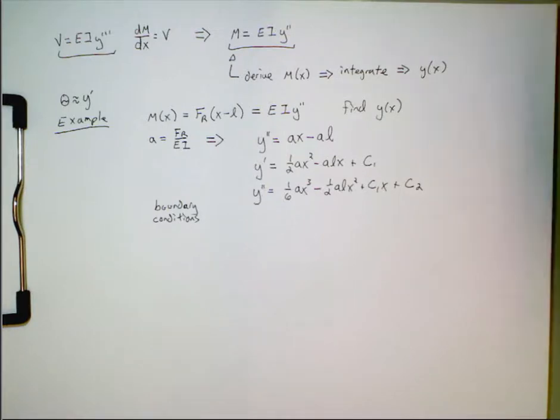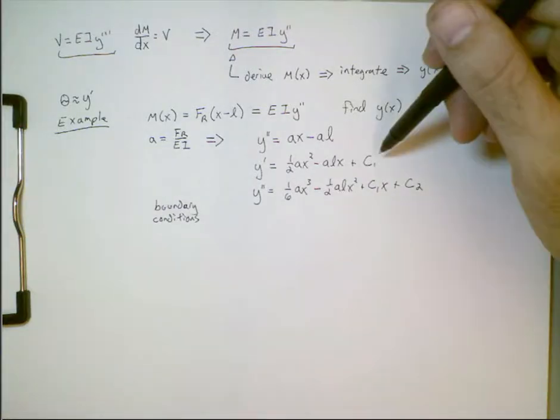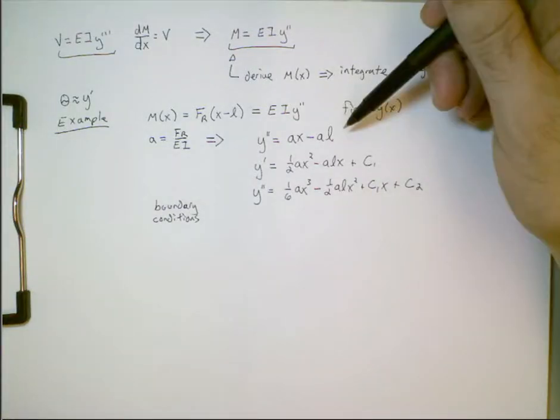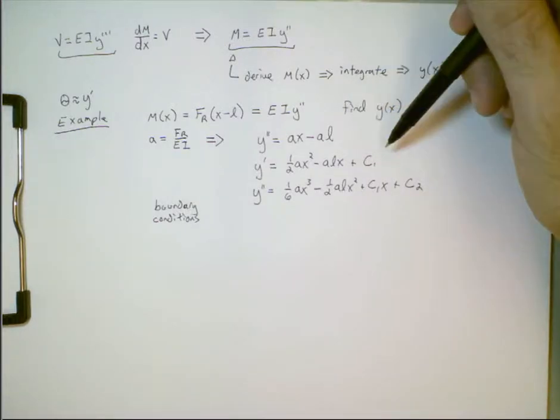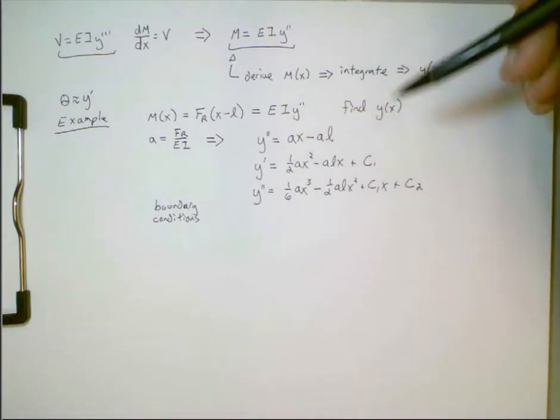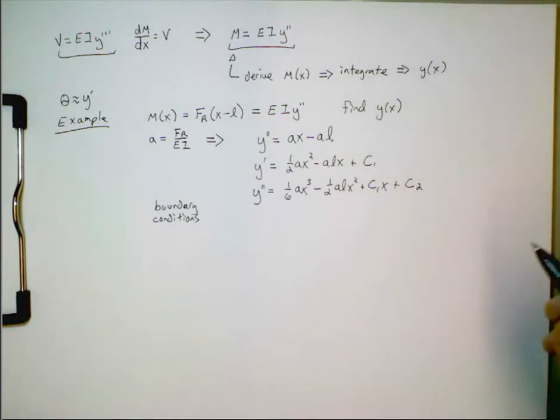We need to identify and then use some boundary conditions to figure out what these constants of integration are. So, here's another question. How many boundary conditions do we need? Well, each boundary condition is essentially an equation. And, well, here we have two unknowns because we started off with a second order differential equation. Because we have two unknowns and because this was a second order equation, that means we need two boundary conditions.